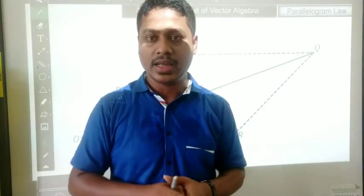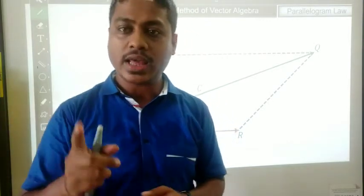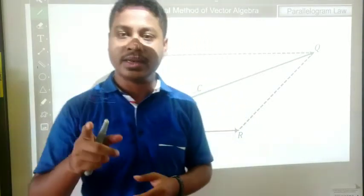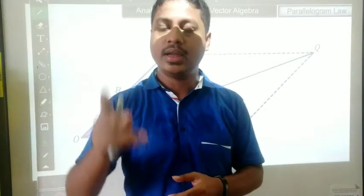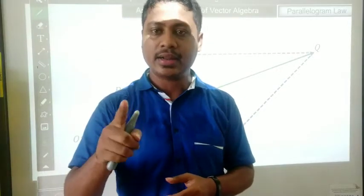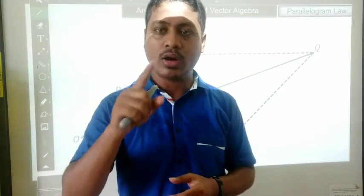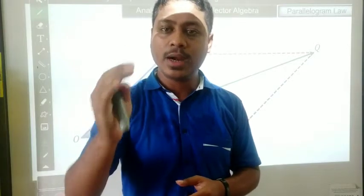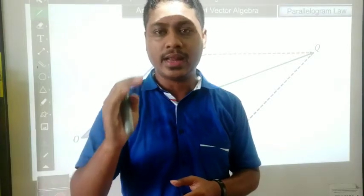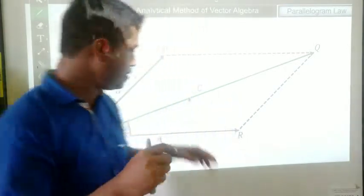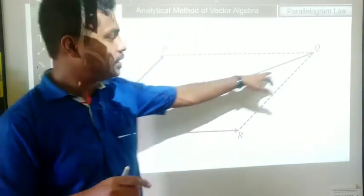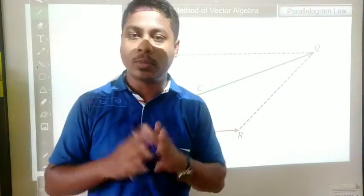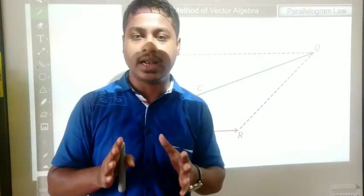The parallelogram law of vector addition states that if the two sides of a parallelogram are represented by two vectors, the resultant — that is the total of the two vectors — will be represented by its diagonal. So let us prove it and find the formula for the resultant.